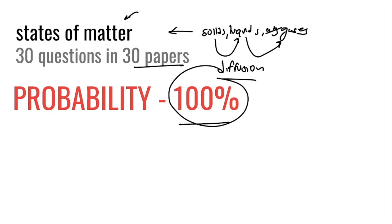As we go through the whole video, you'll see that almost all topics are above 100% probability. That means almost all topics mentioned today are likely to come. Topics with higher probabilities will have more questions in your paper. Use this video as a prediction guide — all these topics will come, and the ones with higher probability have a higher chance of more questions appearing.